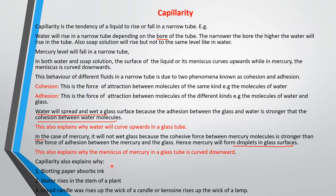Other areas where you experience capillarity include blotting paper that absorbs ink — that is capillarity. Water rises in the stem of a plant; the leaves receive water from the roots by capillary action. Another example is candle wax rising up in the wick, or kerosene rising through the wick of a kerosene lamp — that is also capillarity. These are everyday experiences that demonstrate capillarity.